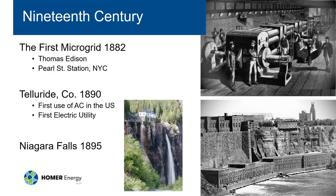Telluride, Colorado — now a world-class ski area but a mining town in the 1800s — claims to be the first electric utility in the US and the first use of AC power. This set the stage for broad use of AC, which can be transmitted long distances. The movie 'The Current War' covers the rivalry between Edison promoting DC and Westinghouse and Tesla promoting AC quite accurately. AC won because it could be transmitted long distances, and within a few years the large Niagara Falls system was built.